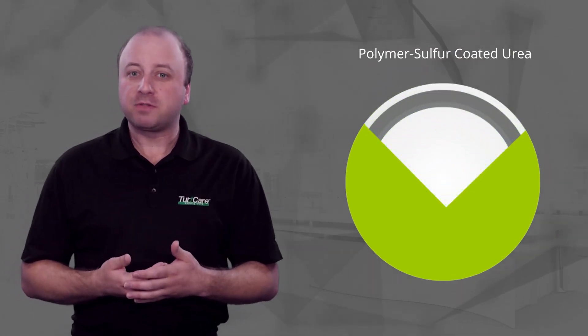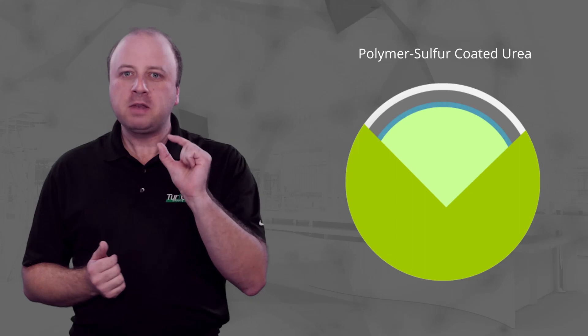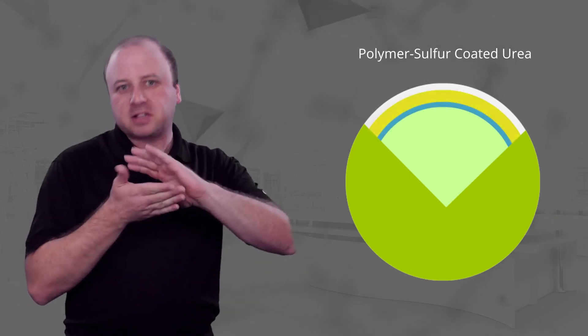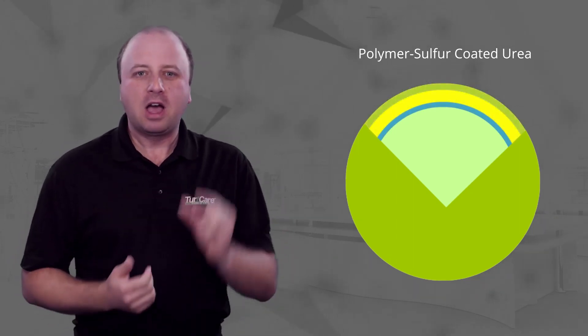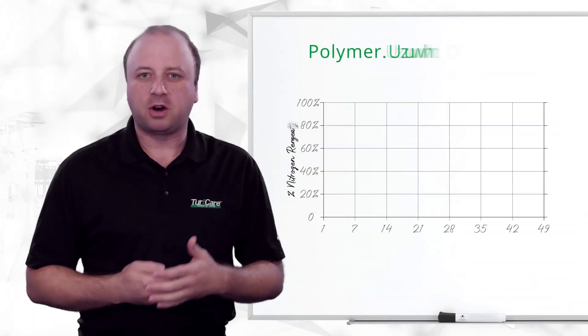Note that at the center of the granule is a urea core followed by a thin polymer layer, then a thick sulfur layer, and finally a thin outer wax layer. Now let's take a look at this product's dissolution rate curve.